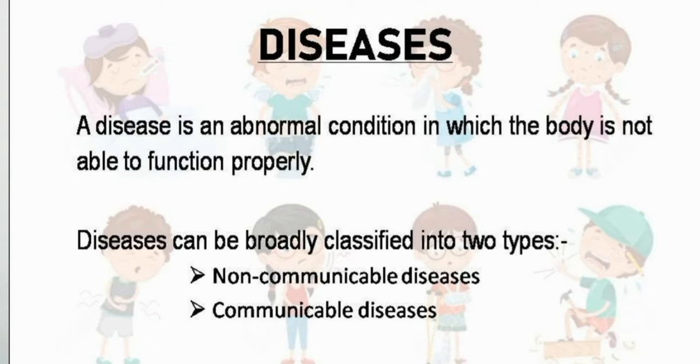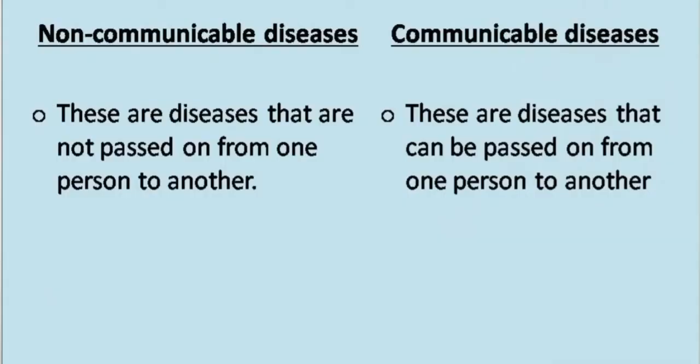Now we will see protection from diseases. What is a disease? A disease is an abnormal condition in which the body is not able to function properly. Diseases can happen for many reasons - if any part of your body doesn't work properly, or if your diet has a lack of any nutrient, causing a deficiency disease.